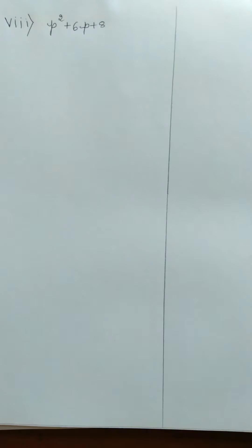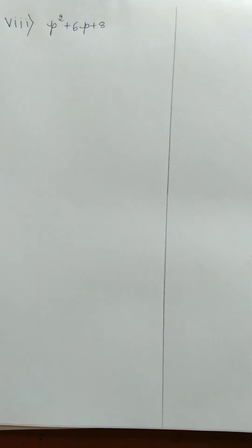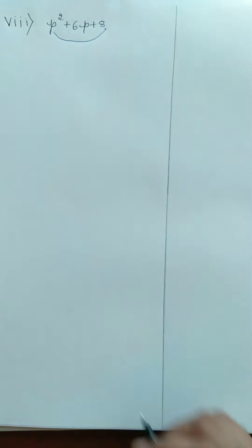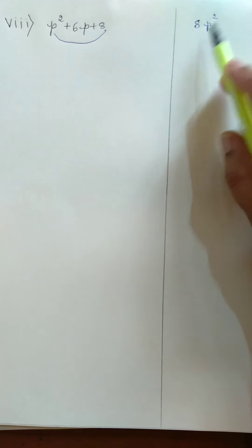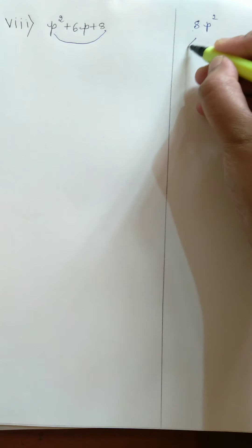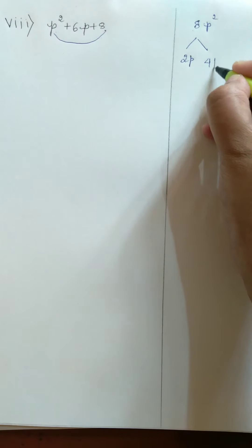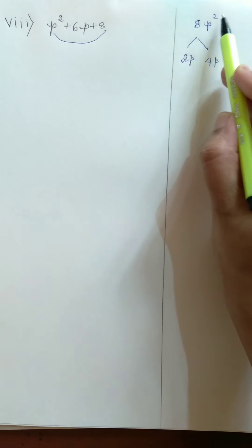Consider the first problem — problem 8: P squared plus 6P plus 8. There are 3 terms in this algebraic expression. Consider the first and the third term, P squared and 8, giving us 8P squared. Express 8 as a product of 2 factors: 2 fours are 8. Putting P into both factors, 2P into 4P equals 8P squared.